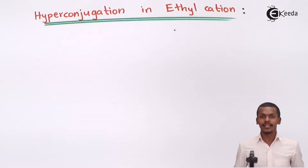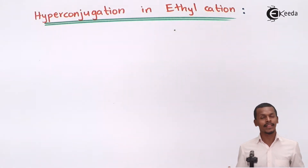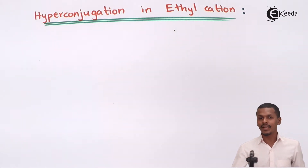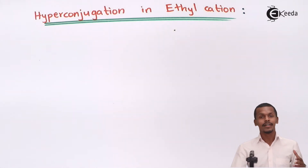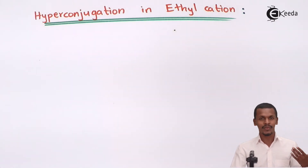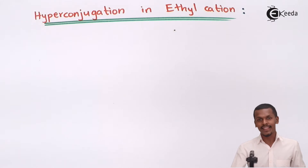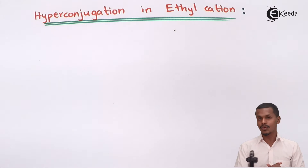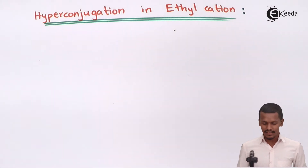The ethyl cation consists of a carbocation which is exhibiting sp2 hybridization, because of which there is a vacant p orbital left out. That is the reason the methyl group adjacent to the carbocation shares its sigma bond electrons between the carbon and hydrogen, which get delocalized to the empty p orbital of the carbocation. This delocalization is known as hyperconjugation, and based on that we will represent hyperconjugation of the ethyl cation.